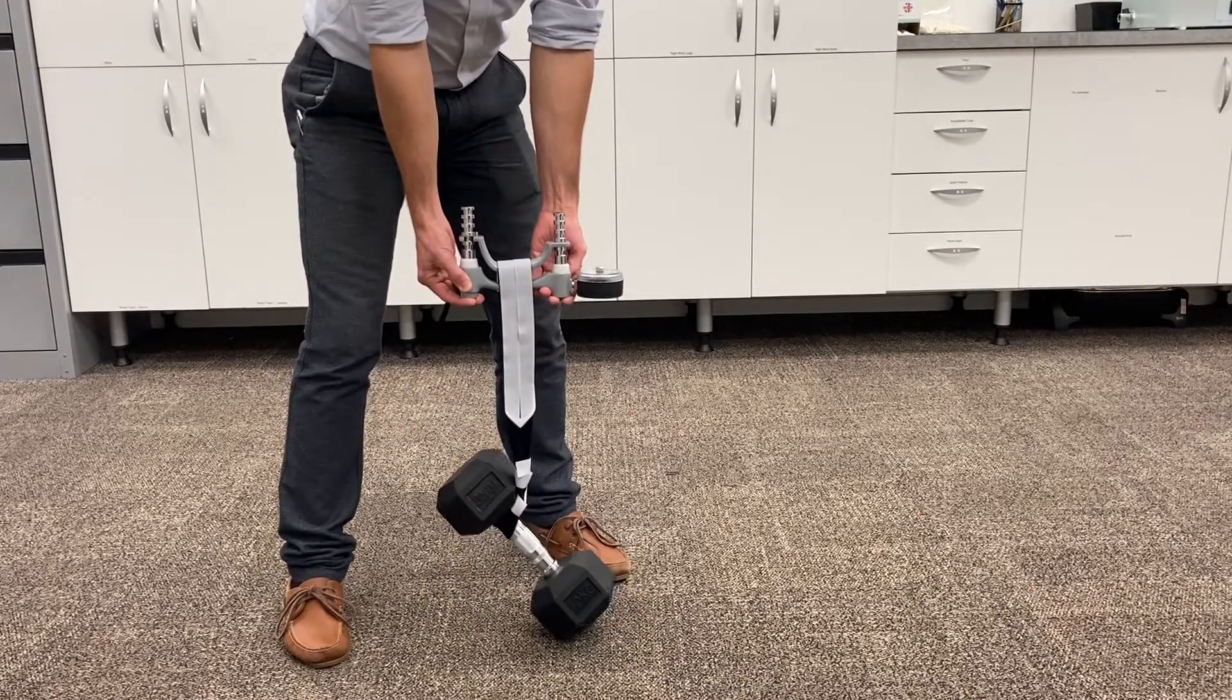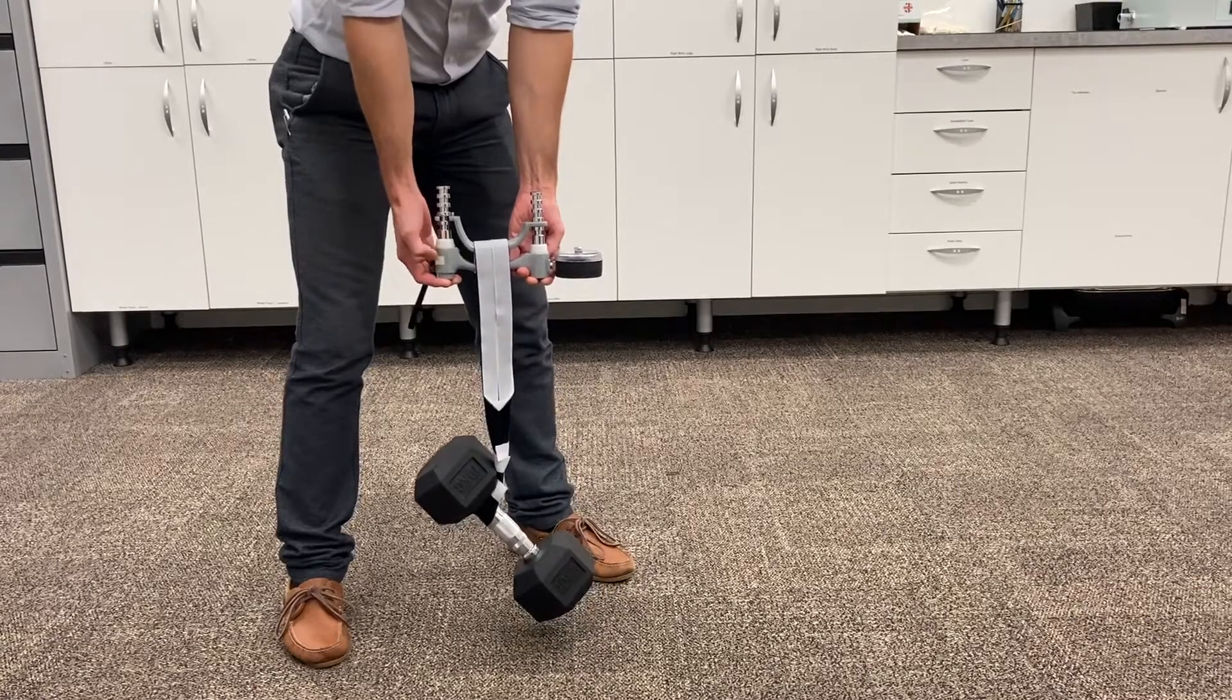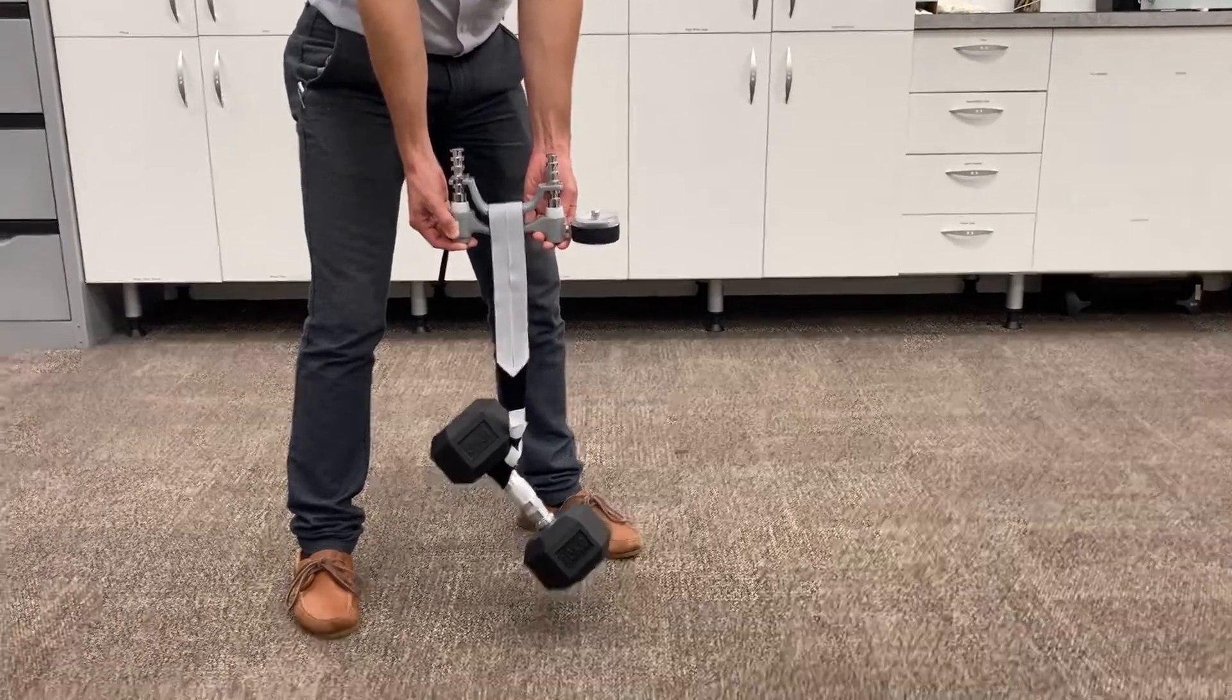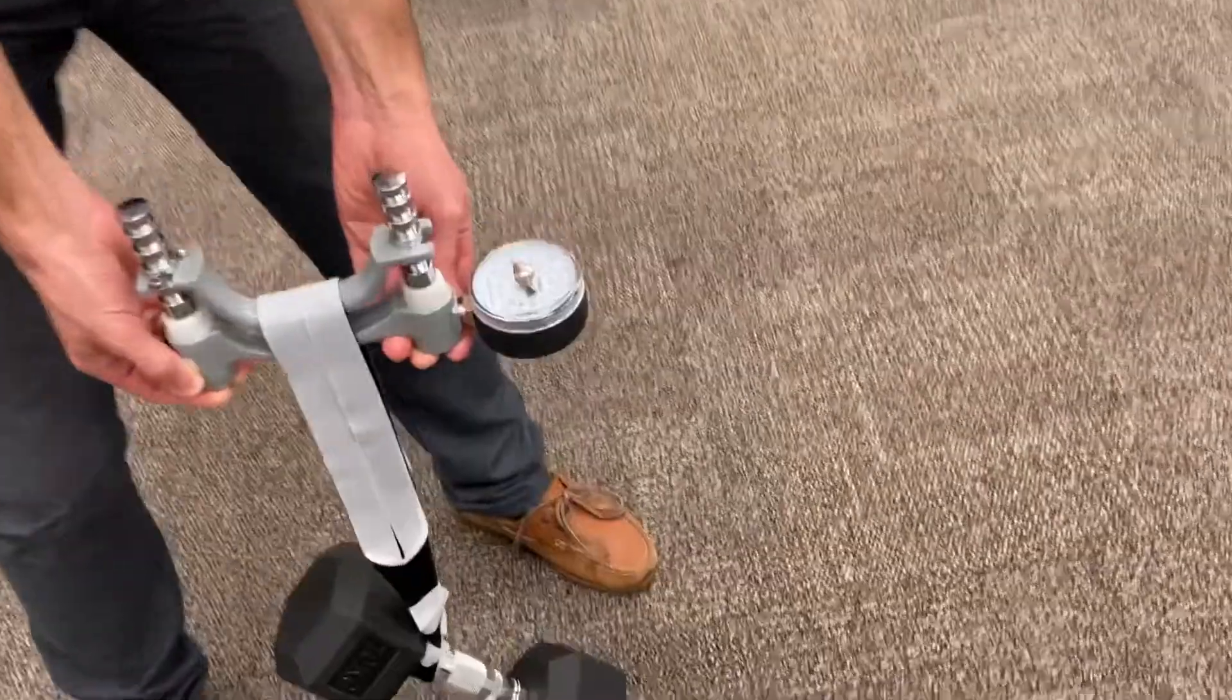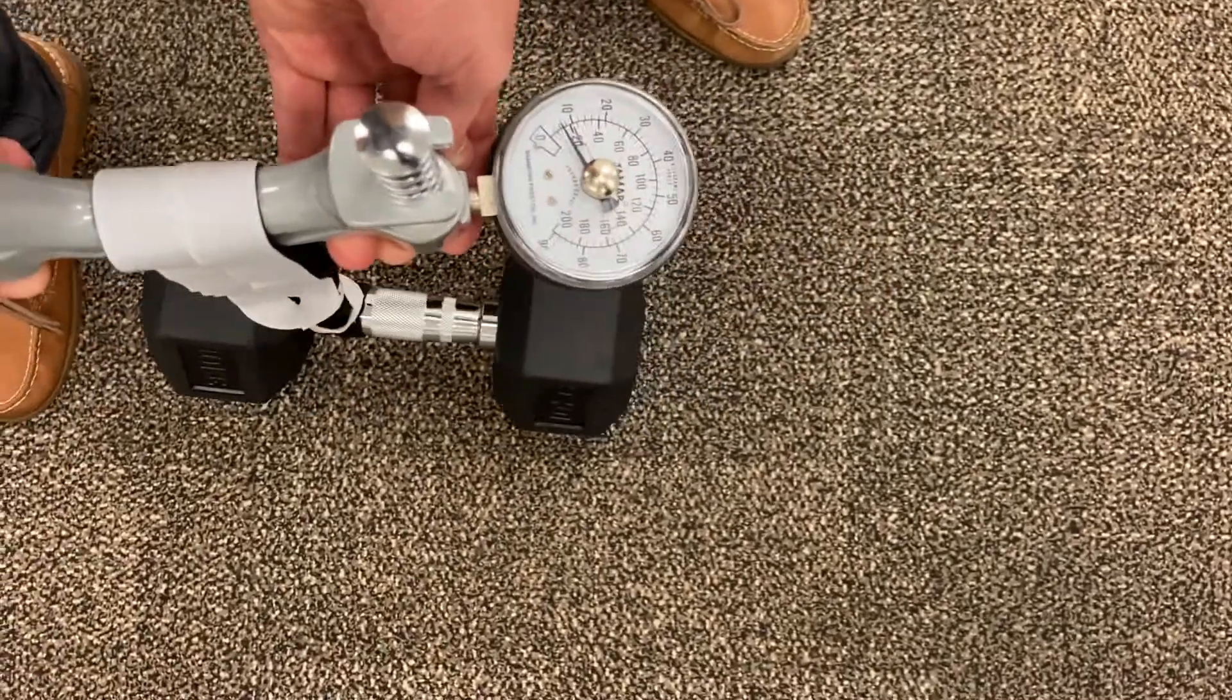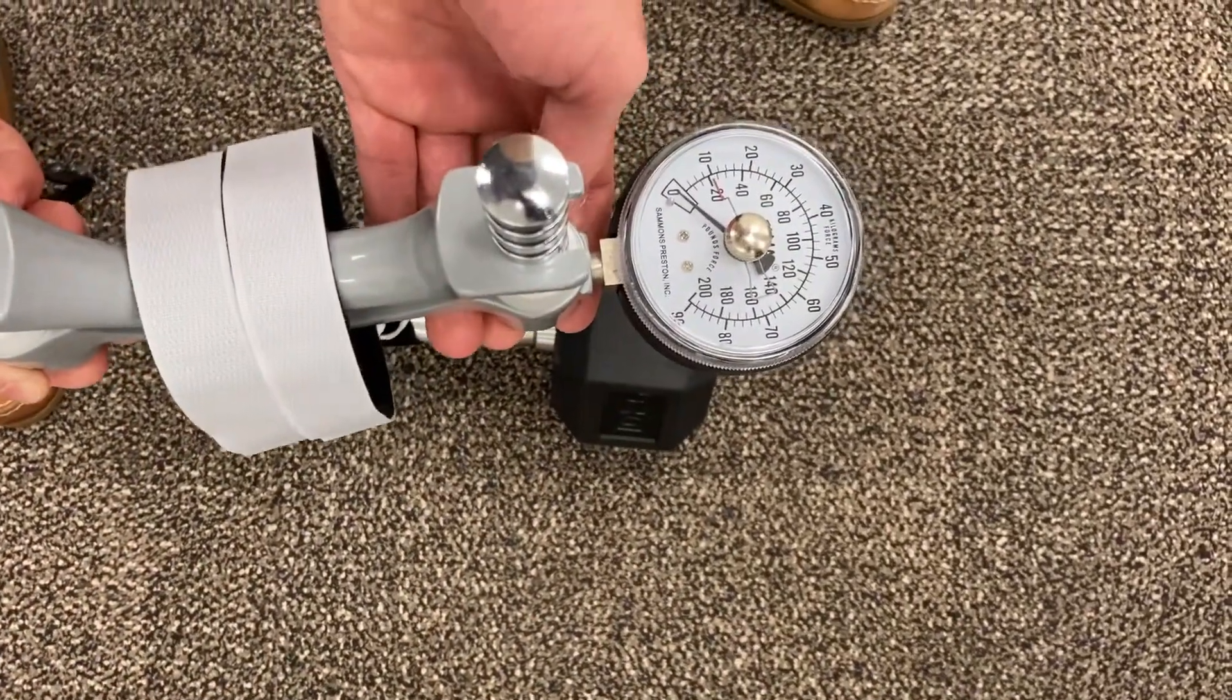We're not putting any pressure onto the two poles with our hands. And then if you come over and have a look, it's spot on 10 kgs. And we bring it back down and it goes back down to zero. So that's how you can test it against the known weight.